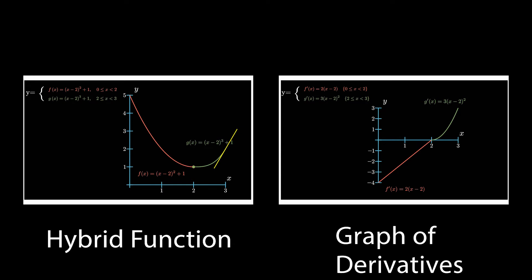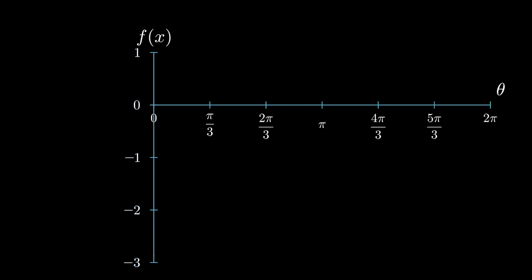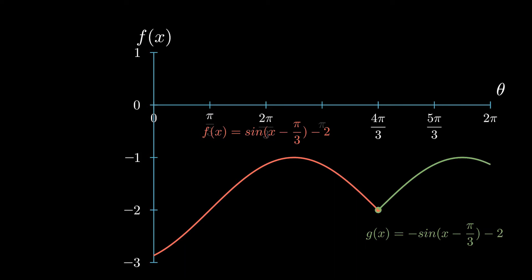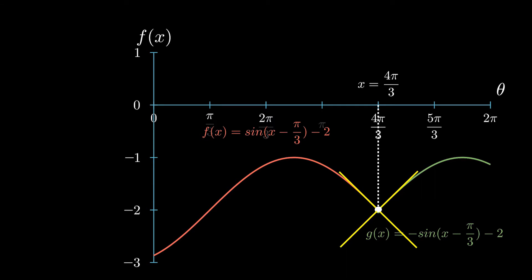Now we're going to have a look at a non-example — a case where we would not have differentiability at a point. Let's say I've got sine with those parameters and a negative sine of these parameters, and I'm interested at the point 4π/3. What we can see here is that we've got a corner. So immediately you can see it's probably not going to be differentiable — you can think of it as skating along this curve, and when you get to 4π/3, you're going to stack it because it's not a smooth curve. The slopes from both sides are not going to be equal — you're stuck at a corner. Therefore, the function is not differentiable at 4π/3.